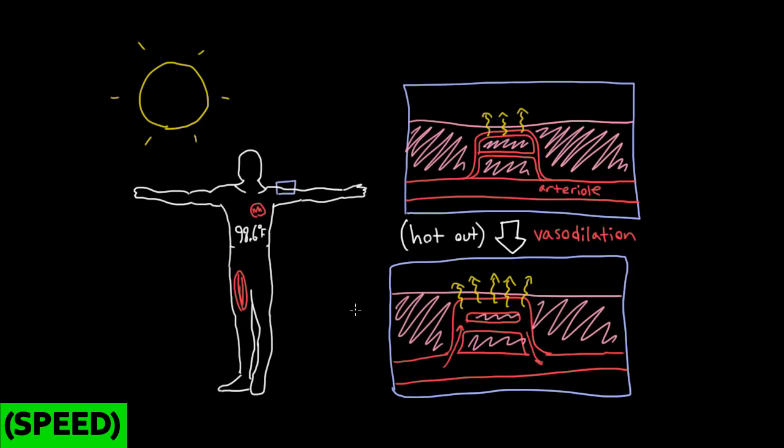Now, this is what happens when it's hot out. And when it's cold out, what do you think is going to happen? Well, when it's cold out, you're going to want to close the windows. You're going to want to close these windows that allow heat out. So you're going to do the reverse. You're going to make your capillaries as small as possible. And as a result, you're going to have less heat at the surface of your skin.